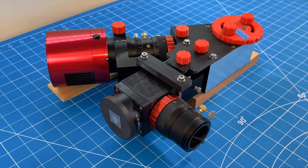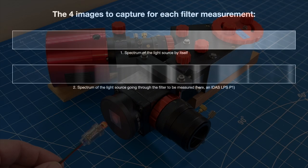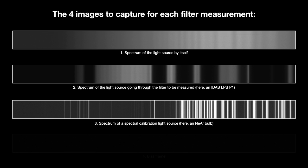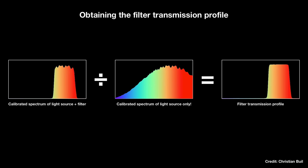The third image is the spectrum of a neon argon high intensity discharge bulb, which gives me enough emission lines to very accurately calibrate the 2D spectrum of the light source with and without the filter in front of it. And finally, I also need to capture a bias frame, which is a very short exposure taken through the camera with the cover on. The processing software uses these four images to produce the spectral transmission profile by dividing the calibrated spectrum of the light going through the filter by the calibrated spectrum of the same exact light without the filter in front of it.